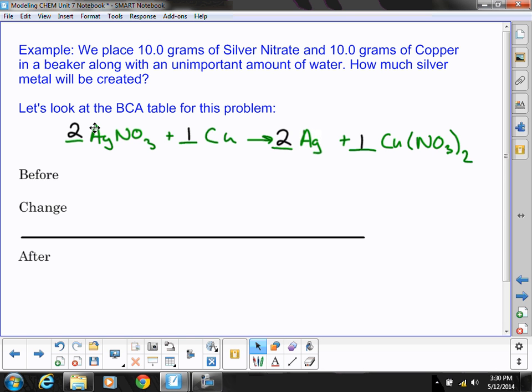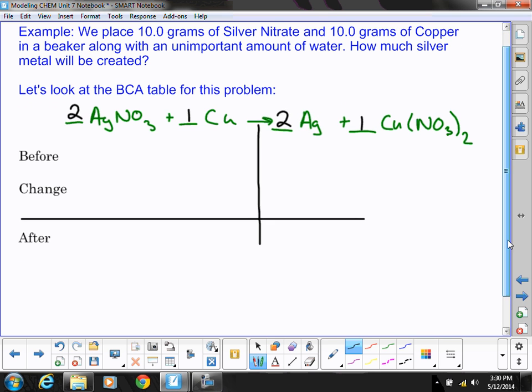But now when we look at the problem, we're given two amounts, 10 grams of silver nitrate and 10 grams of copper. Well, those are both reactants. And before we do anything else, the next step, of course, is to fill in the before line. And since we have an amount for both of our reactants, we're going to want to plug both of those values in for the before line for our BCA table.